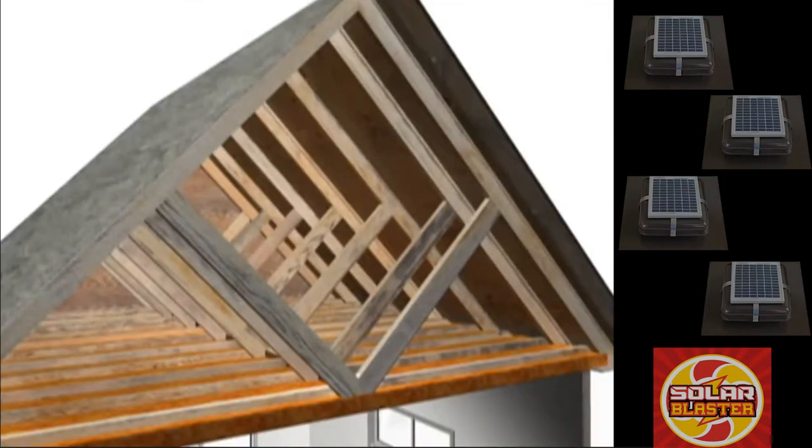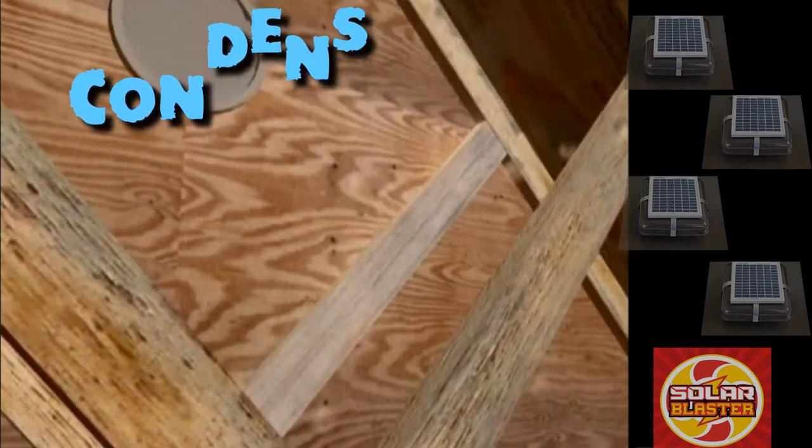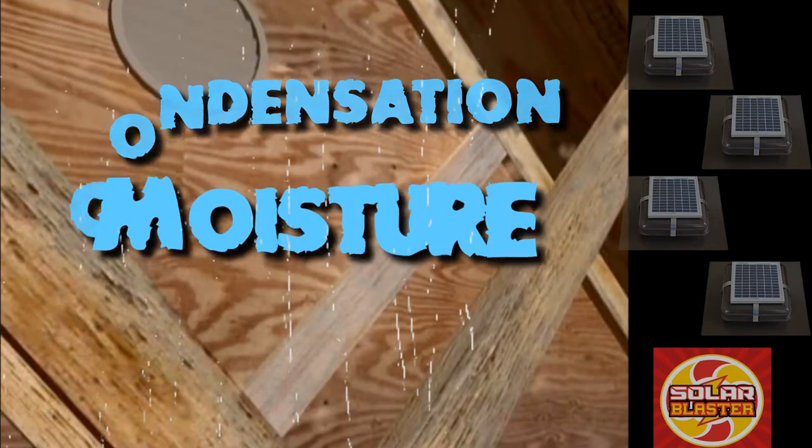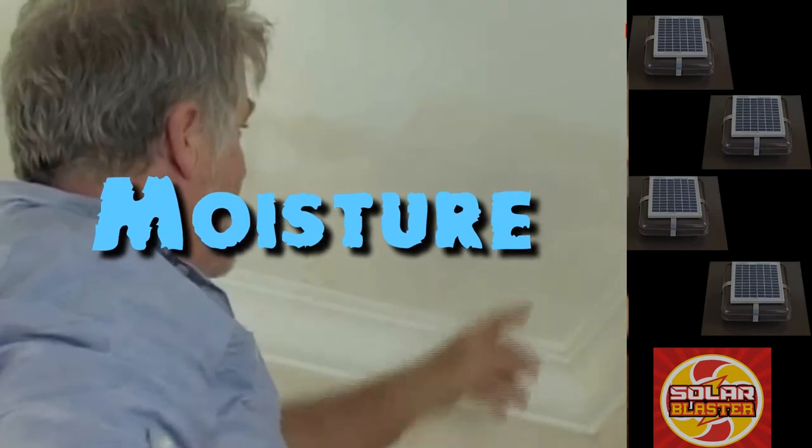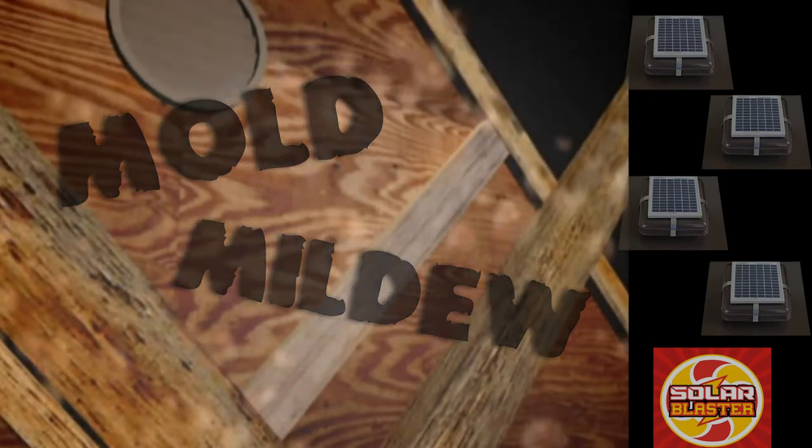During the winter months, your heat loss through the ceiling meets cold air in the attic, which can result in condensation, leaving moisture in your insulation. Not only can moisture damage drywall, resulting in mold and mildew, but over time it reduces the effectiveness of your insulation.